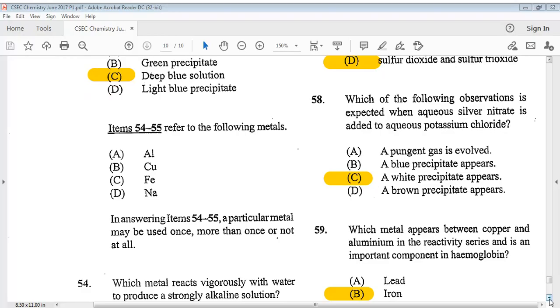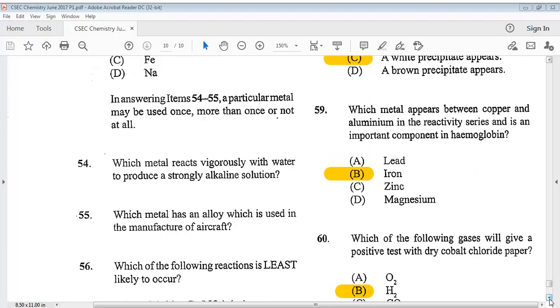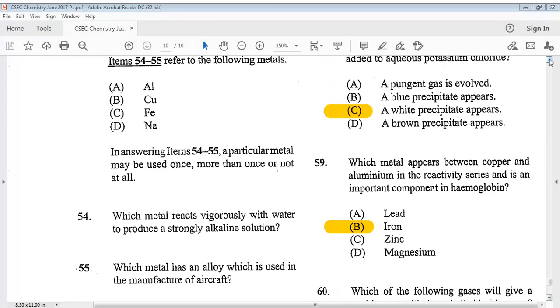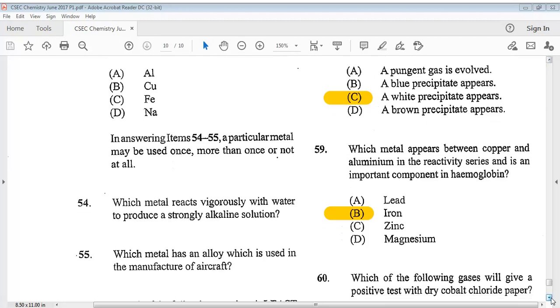Item 54 refers to the following metals. So it says, in answering item 54, a particular metal may be used once, more than once, or not at all. So there we have it from A, B, C, and D. Question 54 says, which metal reacts vigorously with water to produce a strongly alkaline solution? The answer is D, Na. Question 55 says, which metal has an alloy which is used in a manufacture of aircraft? Well, the answer for that is A, Al.